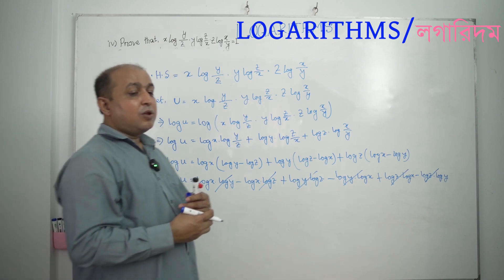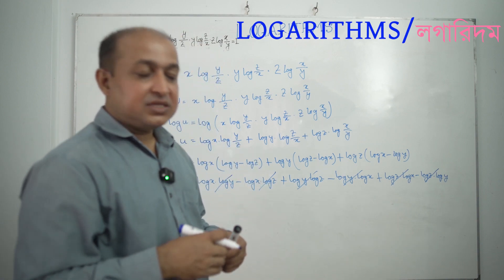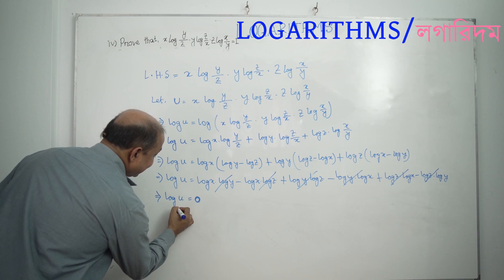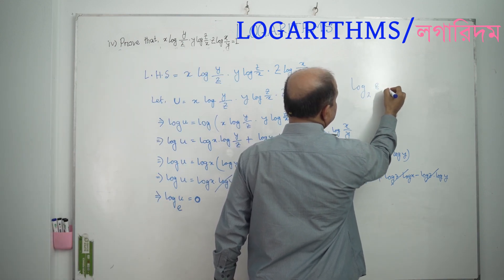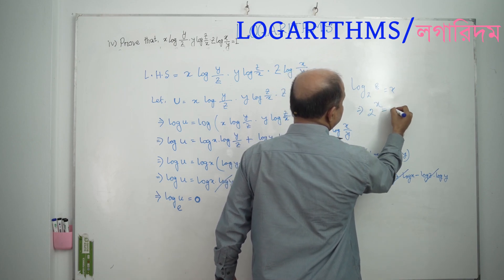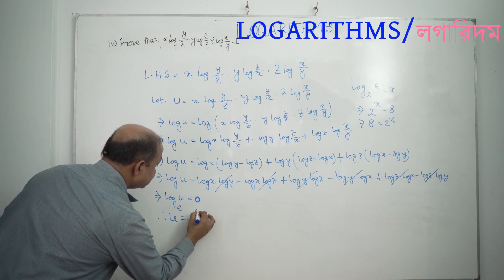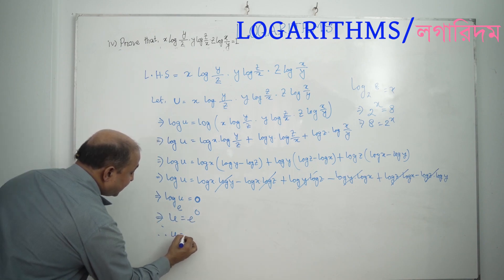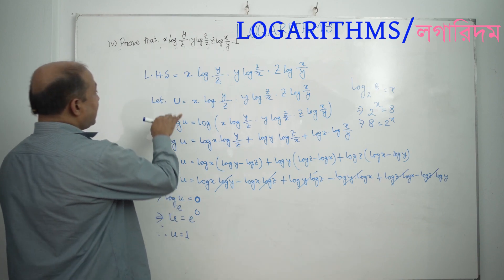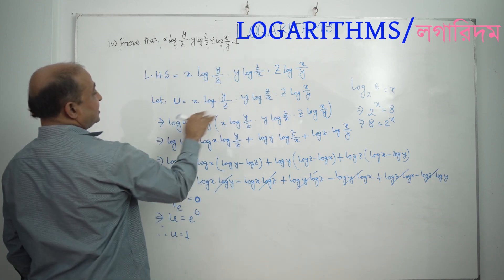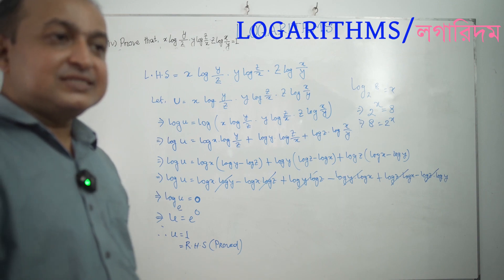Now, in normal logarithm the base is 10, but if the base is e, then it is the natural logarithm. So if we write log base e, then log u equals to 0 means u equals to e to the power 0. So u equals to 1, because anything to the power 0 equals 1. So u equals 1, which equals the right hand side. If you practice this repeatedly, the problem becomes easy to solve.